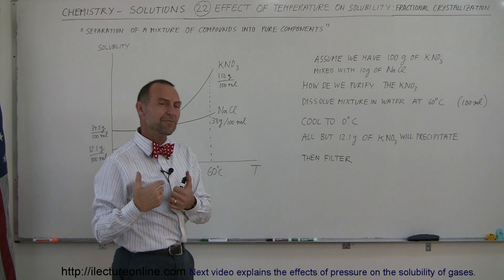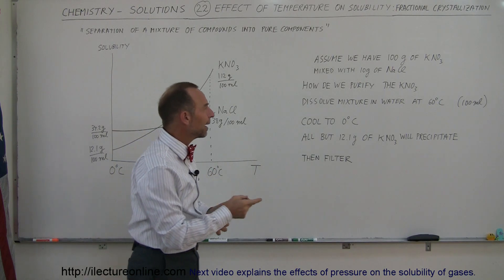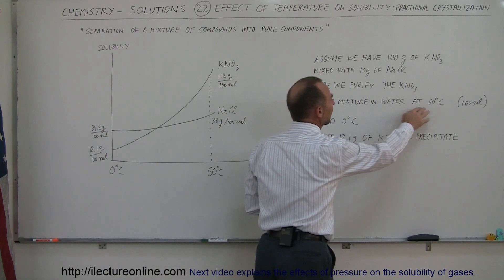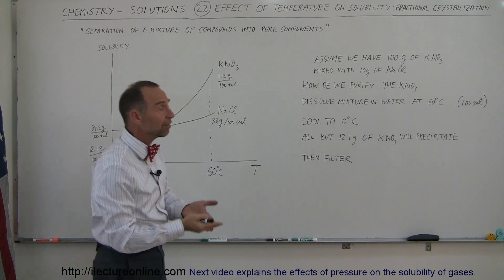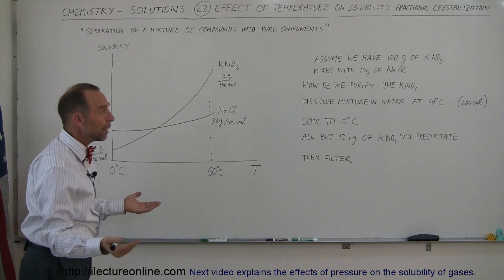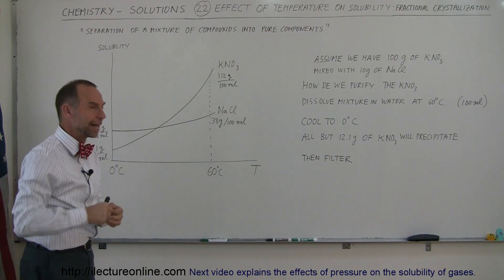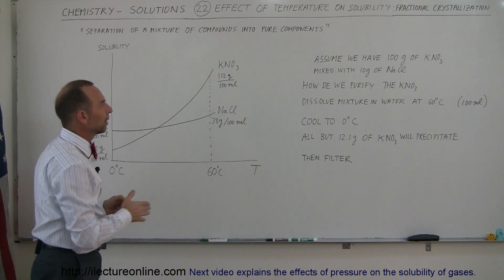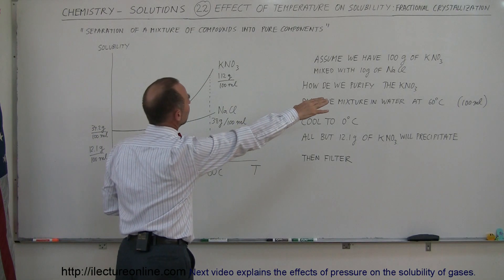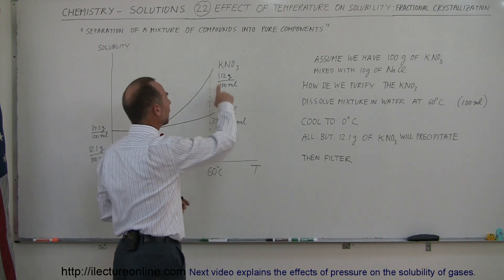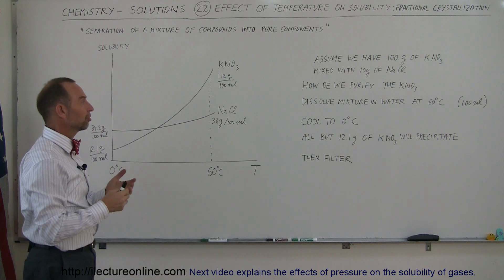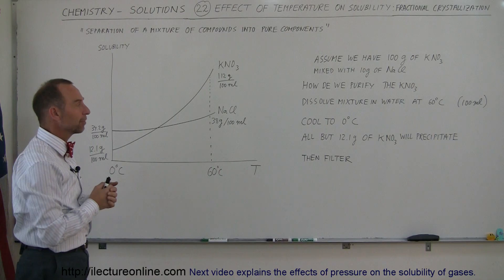Well, we find a way to purify it by dissolving the mixture in water that's at 60 degrees centigrade. Let's say we have 100 milliliters of water. We raise the temperature up to 60 degrees centigrade and we dump our mixture into it. Stir it around, and we know that since there's only 100 grams of potassium nitrate and only 10 grams of sodium chloride, they will both dissolve in that water, and there should be sufficient water there to dissolve both compounds.